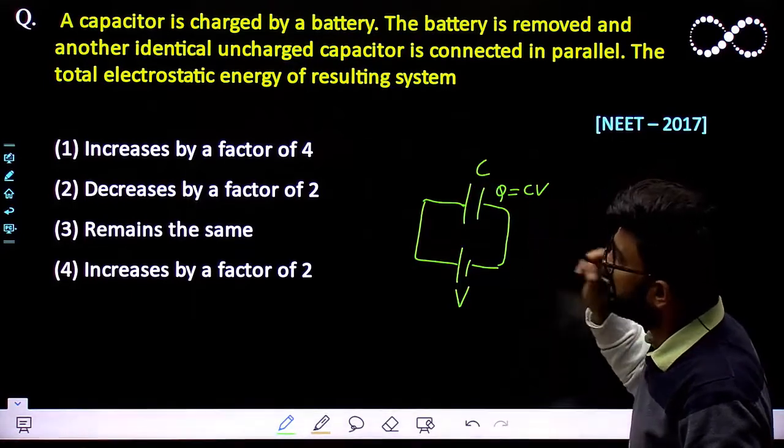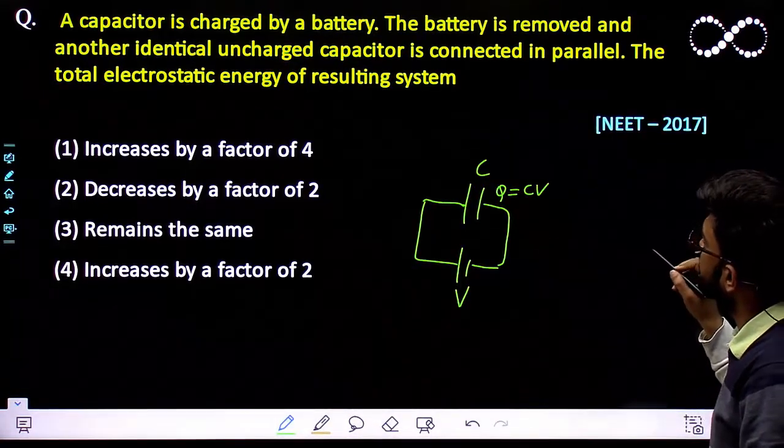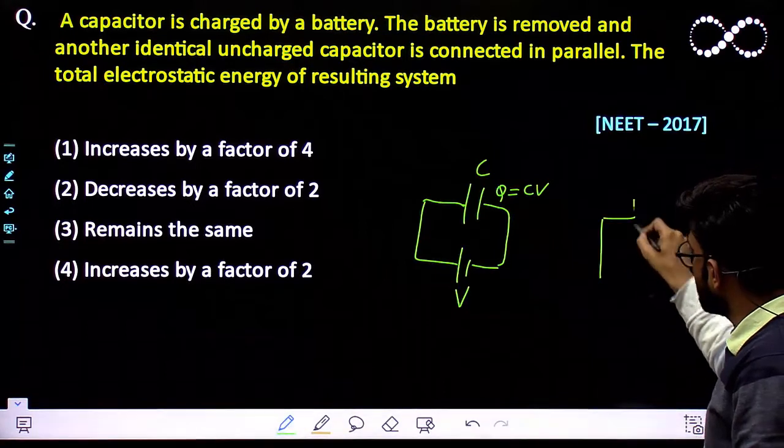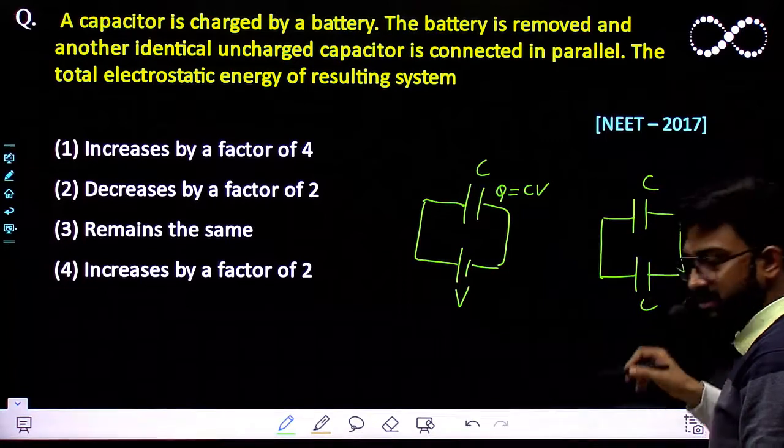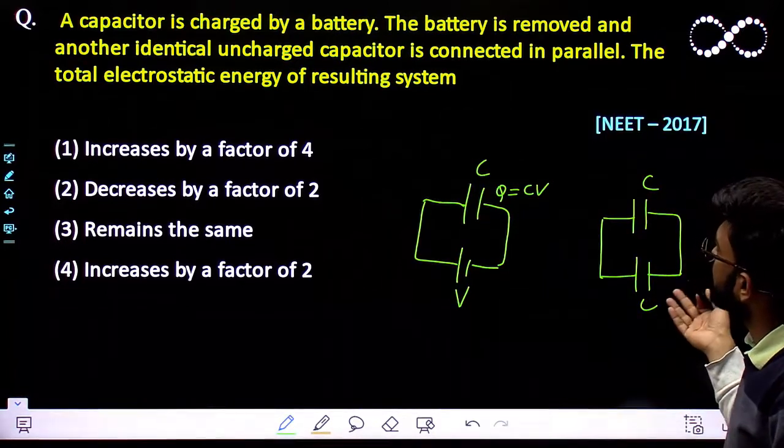Now the battery is removed and another identical uncharged capacitor is connected in parallel. So the battery is removed, another similar capacitor whose capacitance is also C is connected in parallel.